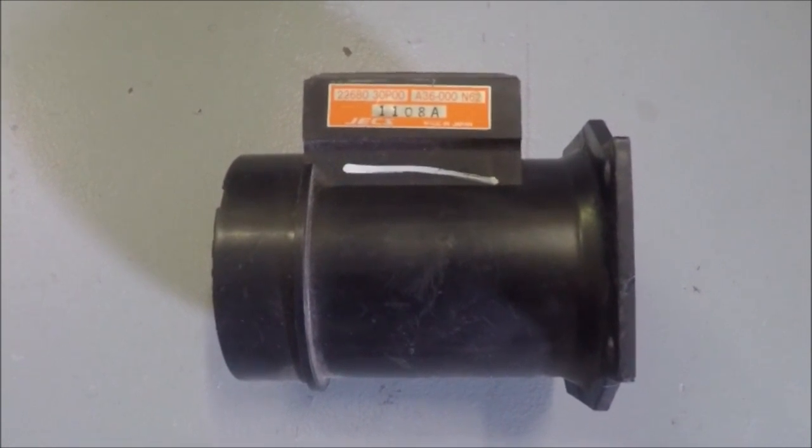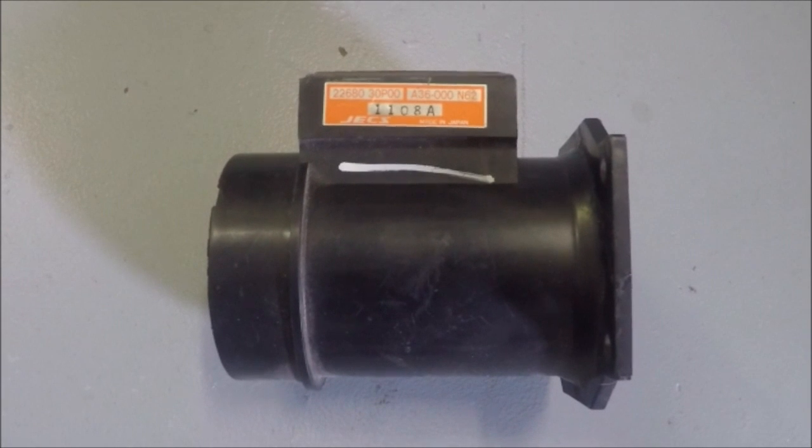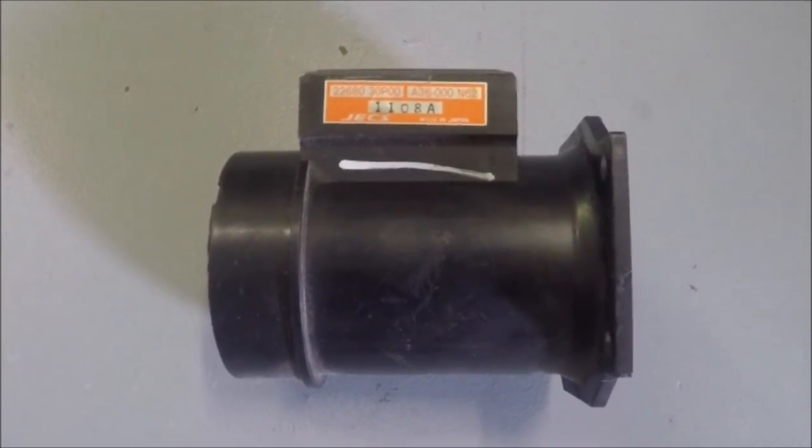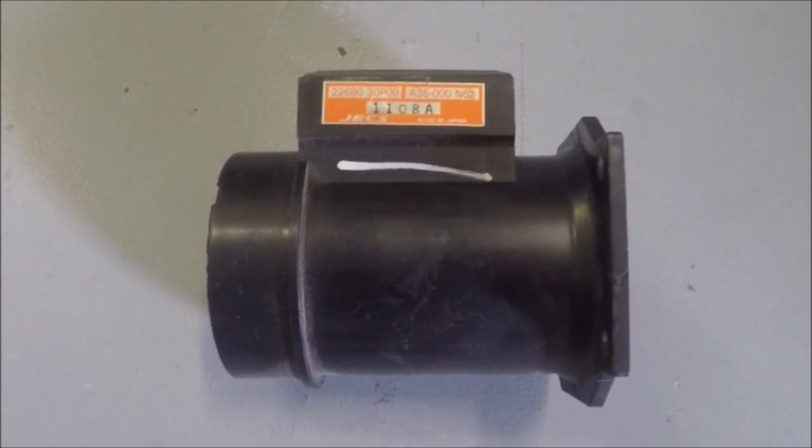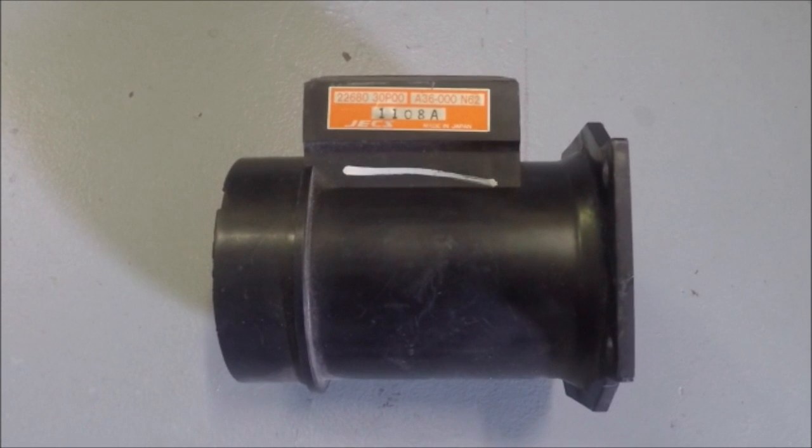This is a 300ZX Z32 airflow meter. Some people also refer to it as a N62 MAF because of the last digits on the part number. This airflow meter has been shown to measure between 350 and 370 rear-wheel kilowatts.